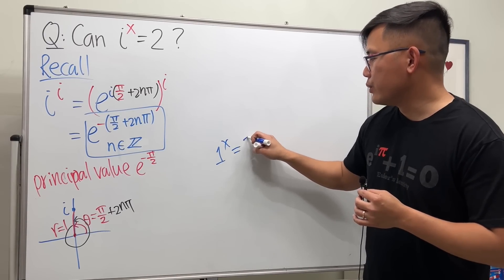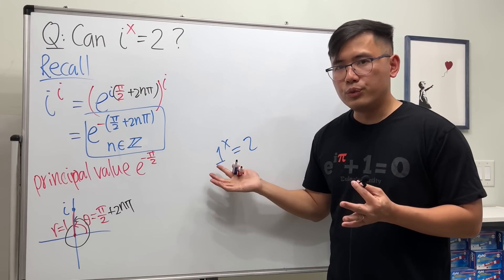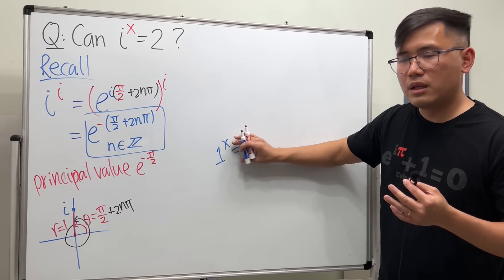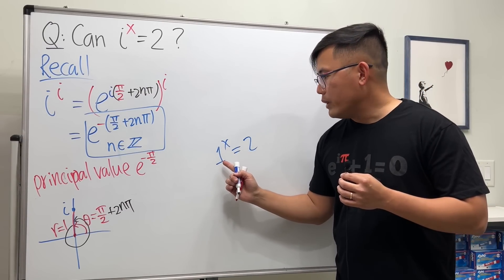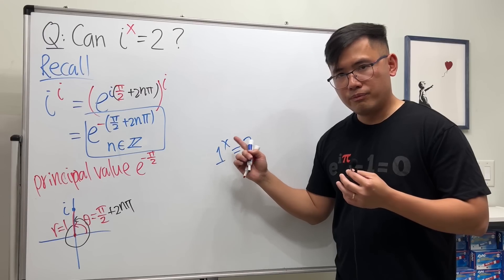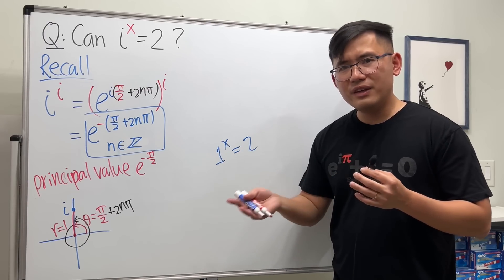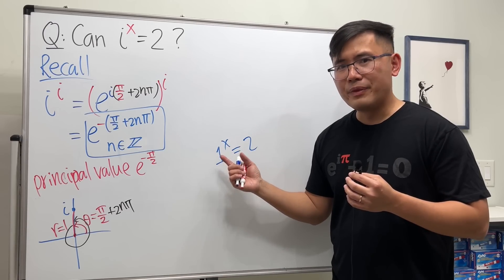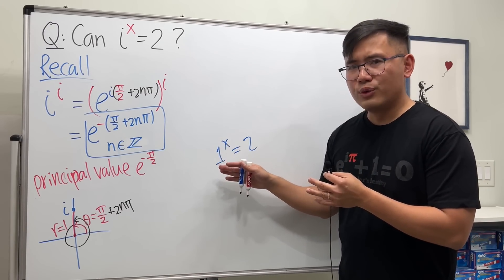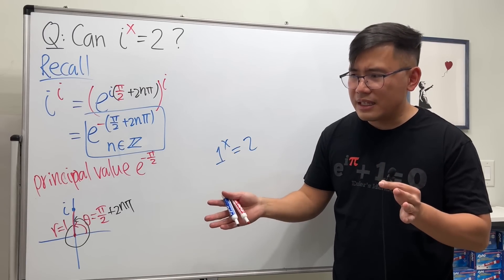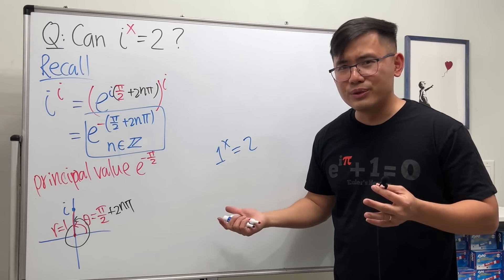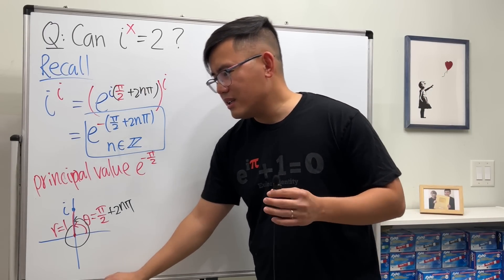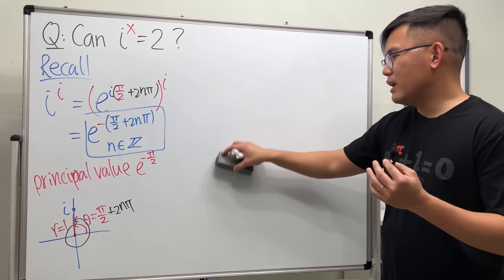Last time when I showed you 1 to the x power equals 2, of course the x cannot be real, because otherwise 1 to a real power is always equal to 1. And the problem is, when we have 1 to a non-real power, we have infinitely many results as well. One of them is 2. Some people say yes, some people may say no. So I will leave that to you.